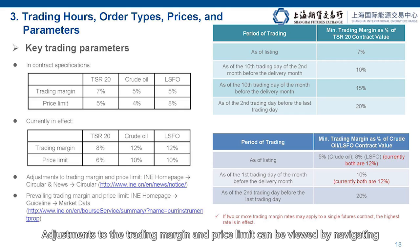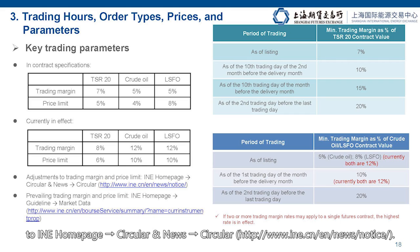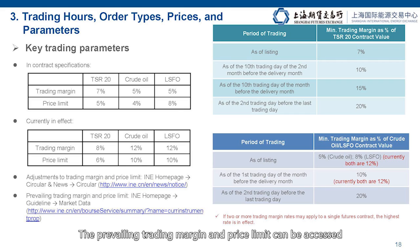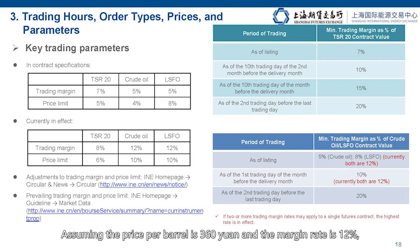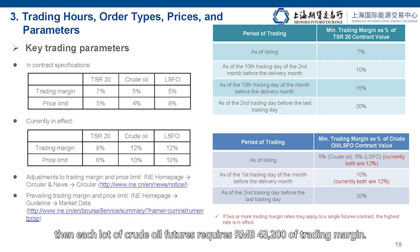Adjustments to the trading margin and price limit can be viewed by navigating to the INE homepage under Circular and News, then Circular. The prevailing trading margin and price limit can be accessed through INE homepage, Guideline, Market data. You may ask how much margin is needed to buy one contract. Let's take crude oil as an example. Each crude oil futures contract corresponds to 1,000 barrels. Assuming the price per barrel is 361 yuan and the margin rate is 12%, then each lot of crude oil futures requires RMB 43,200 of trading margin.